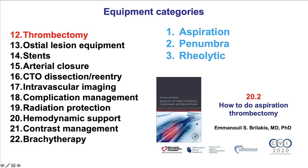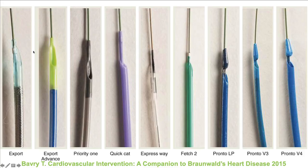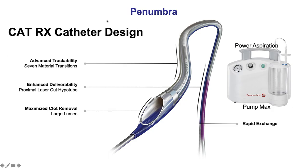Category number 12 are the thrombectomy catheters — there will be a separate video — but we have mainly aspiration thrombectomy and the Penumbra system. Aspiration thrombectomy can be done through a variety of catheters with different delivery profiles. There are 6 and 7 French options, with the 7 French having a higher aspiration lumen and therefore being able to aspirate larger thrombi. The Penumbra system is similar but also has a pump, providing more consistent suction capacity.